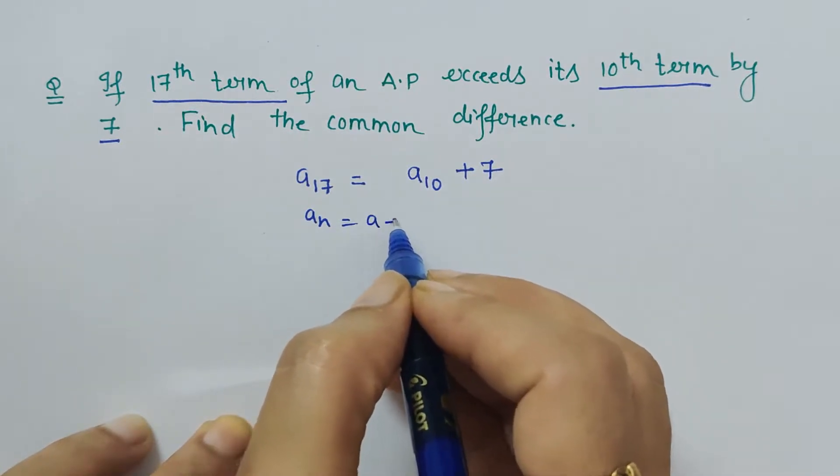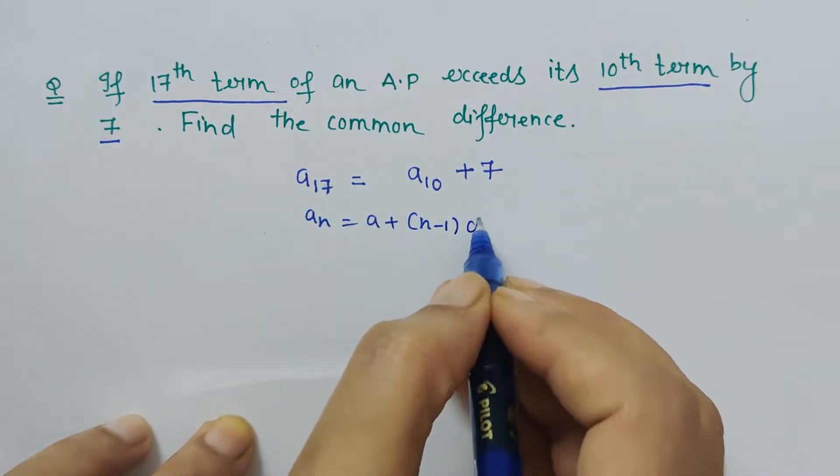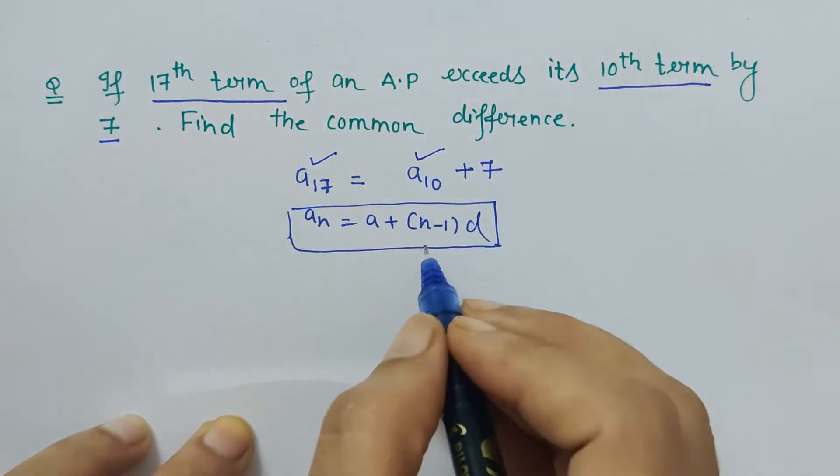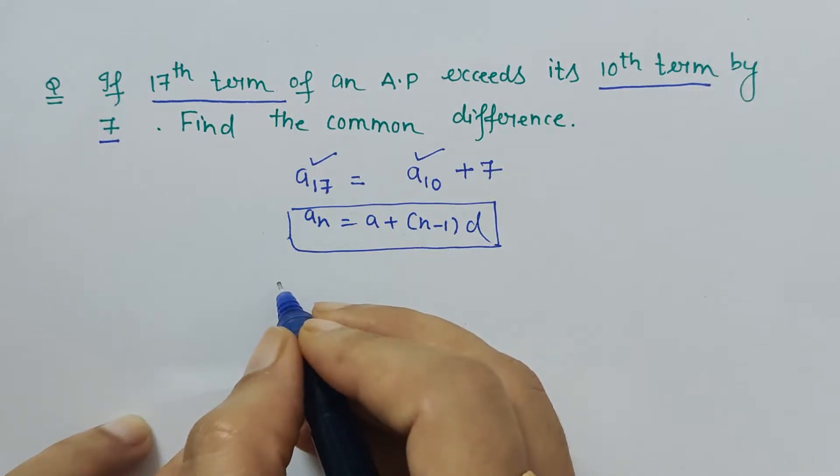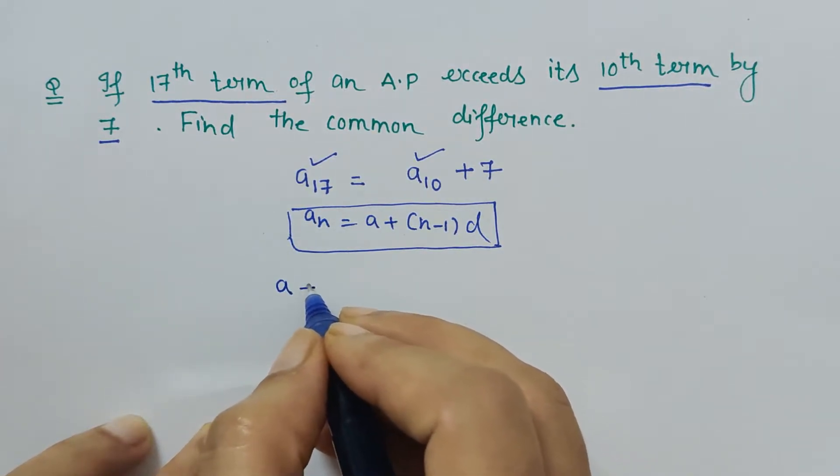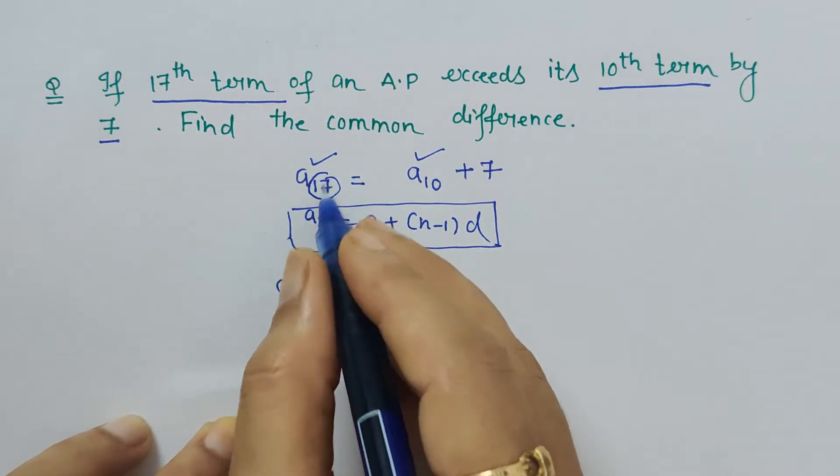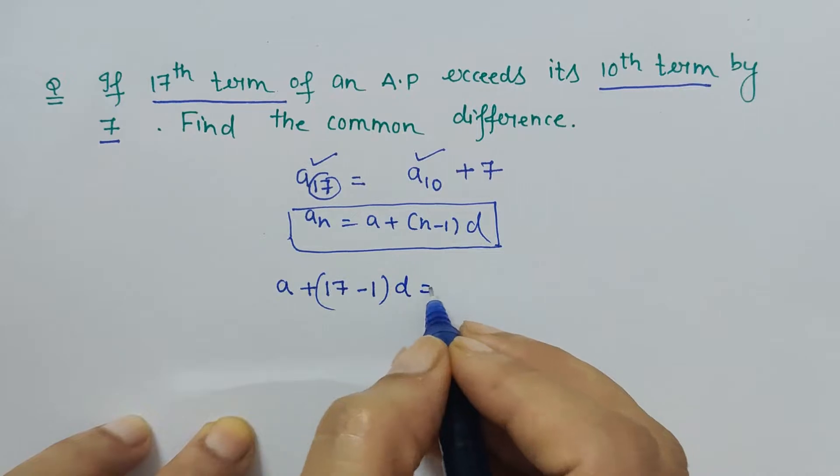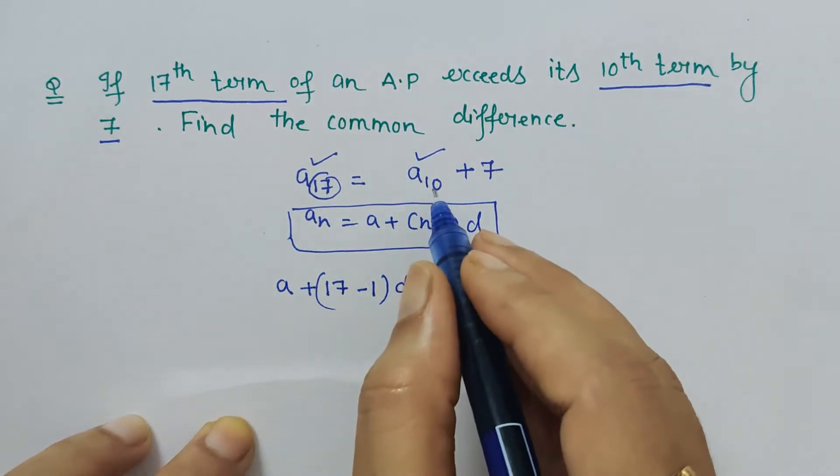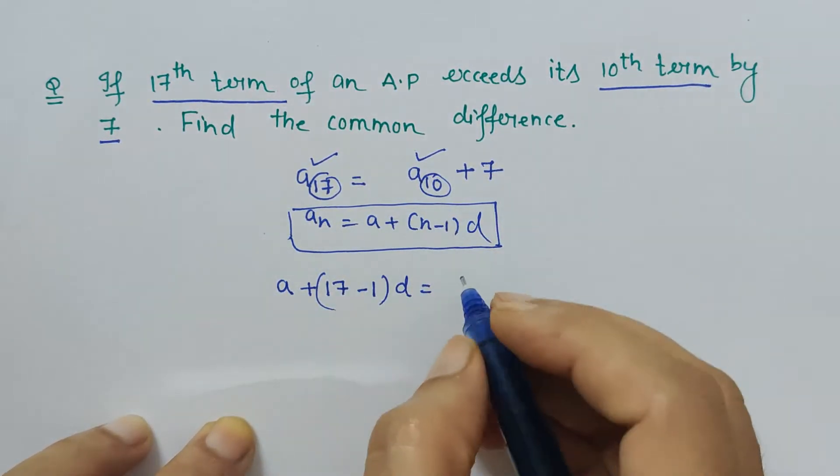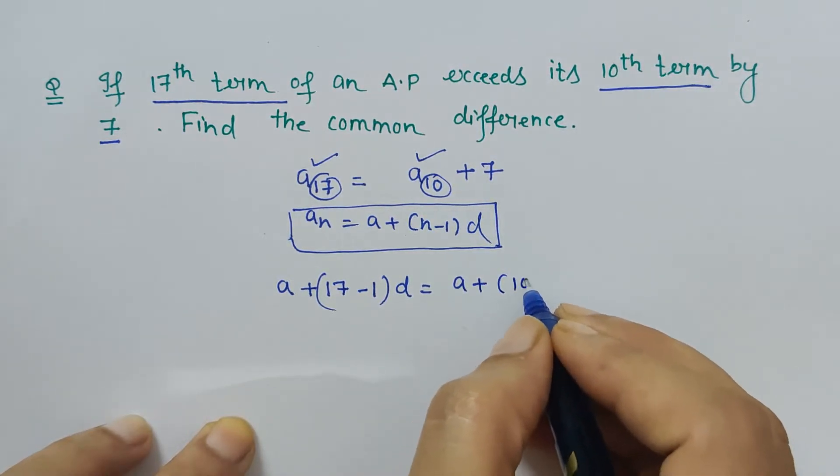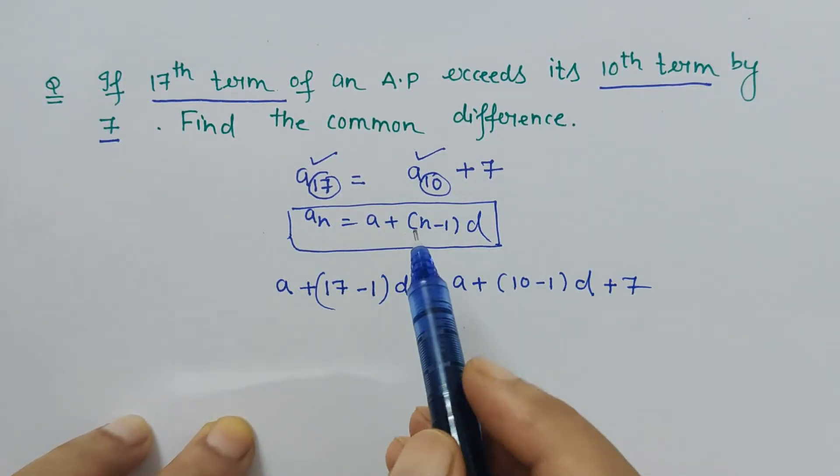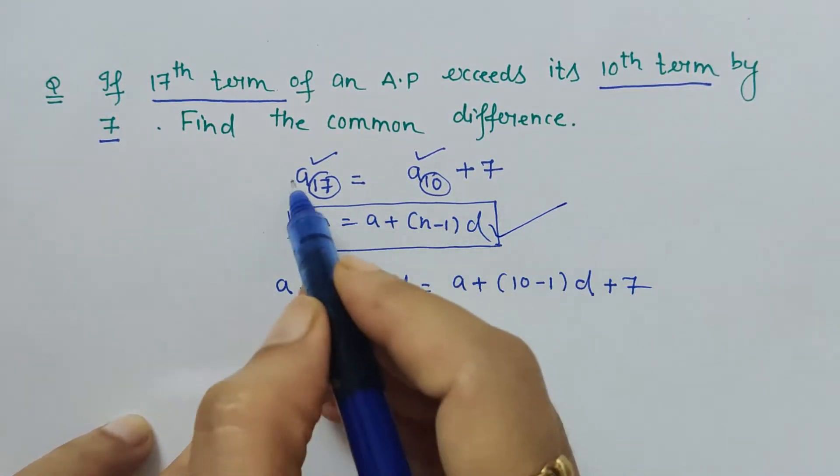Now we all know the formula for an: an is a plus n minus 1 into d. So simply substitute in the formula this a17 and a10. How can I write this? a17 can be written as a plus, here n is 17, so n will be 17 minus 1 into d, is equal to a10. So again here n is 10, so a plus 10 minus 1 into d plus 7. We have just substituted this formula in a17 and a10.